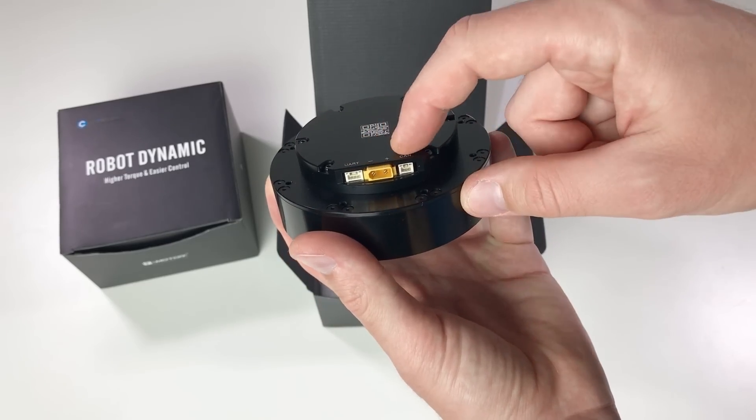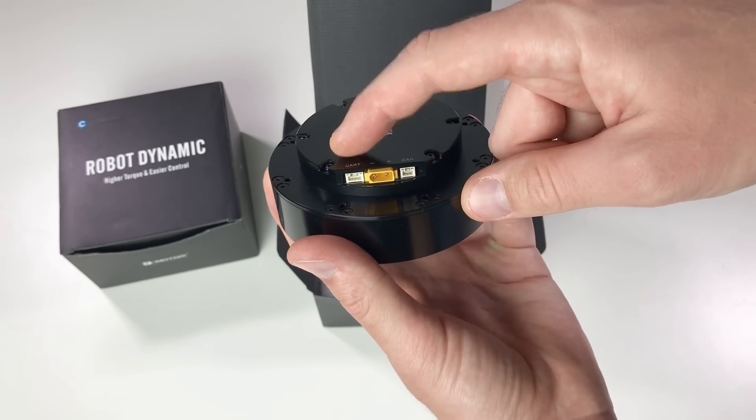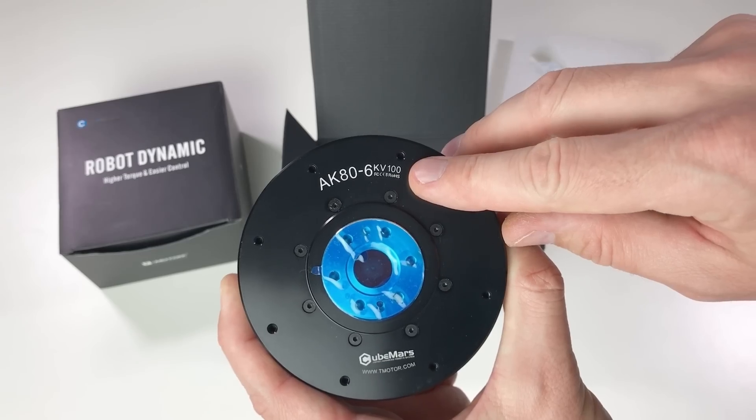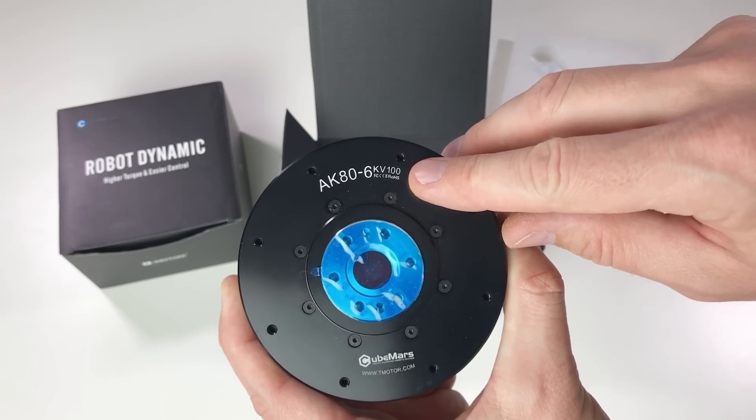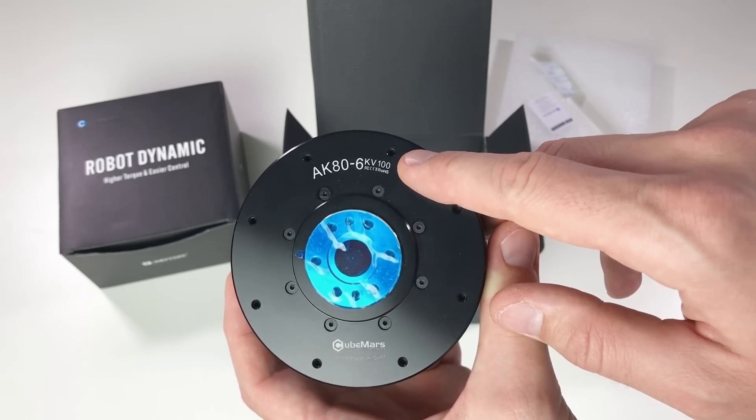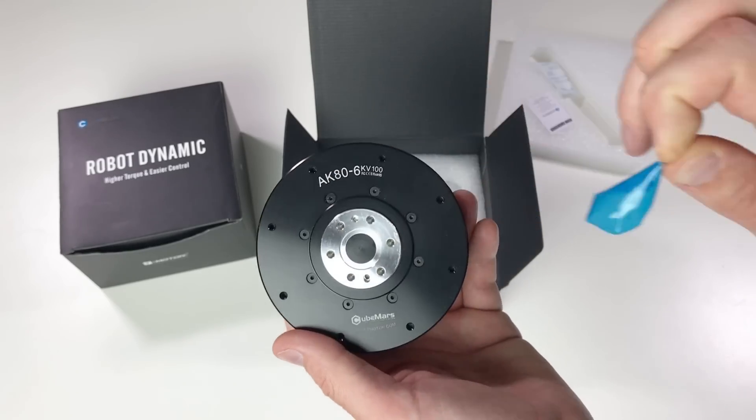And over here there are 3 connectors. One is for the serial port, this is for the setup. This is for the power and for the CAN bus. Apparently it uses a motor with low KV. I think this is the same rating as the MIT Mini-Cheetah actuator.